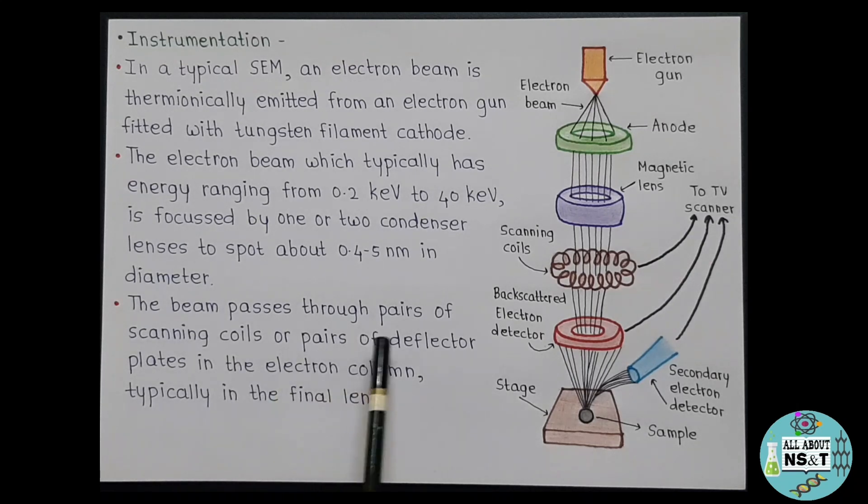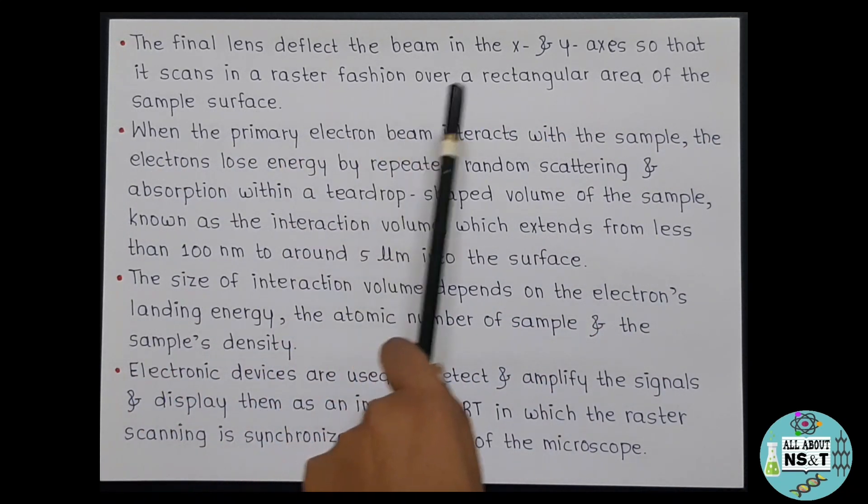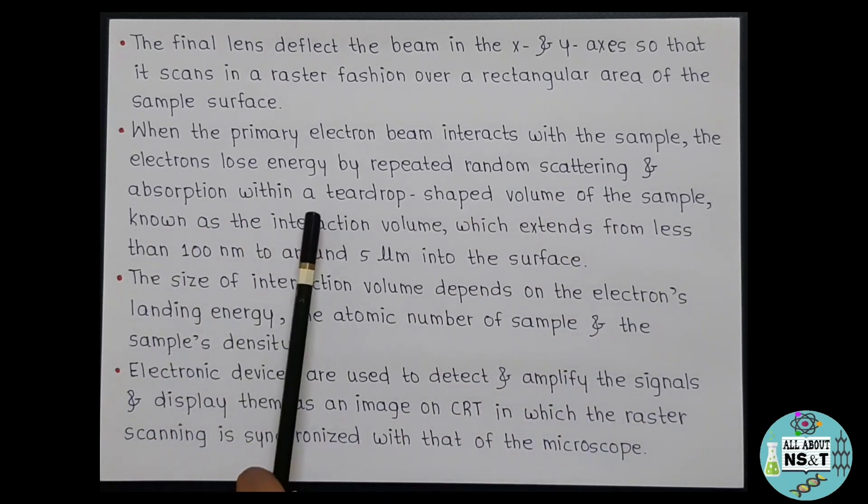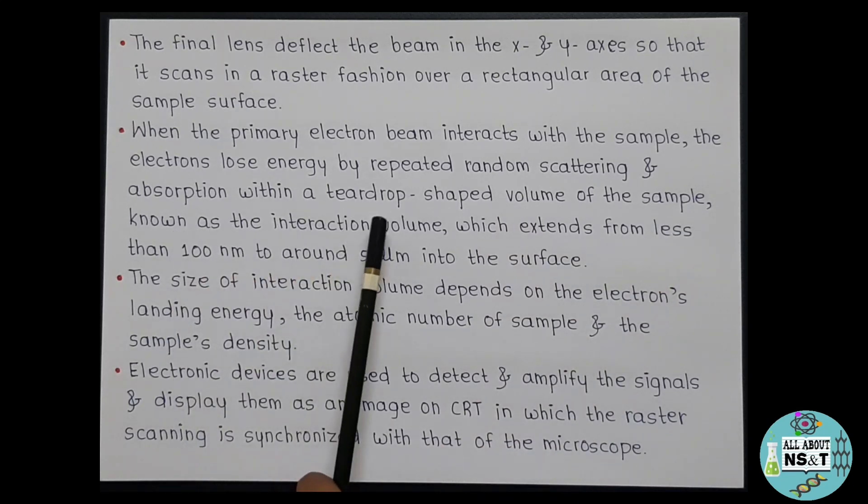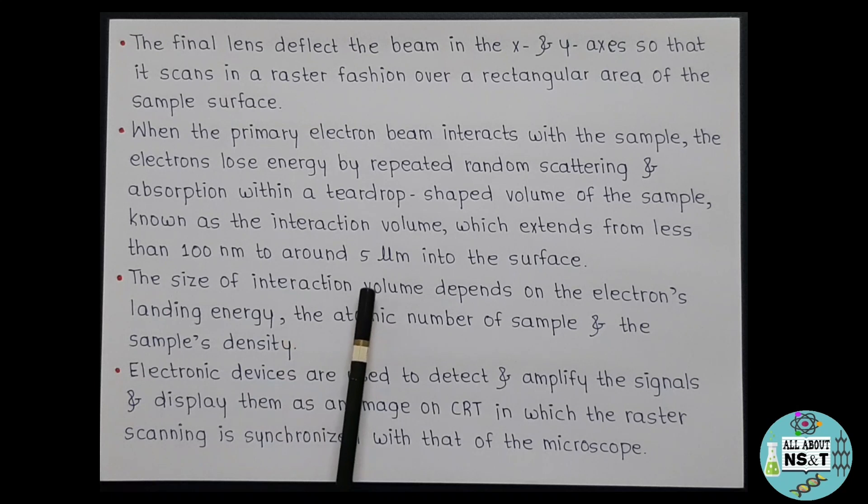Then the beam passes through pairs of scanning coils or pair of deflector plates in the electron column, typically in the final lens. The final lens then deflects the beam in the x and y axis so that it scans in a raster fashion over a rectangular area of the sample surface. When the primary electron beam interacts with the sample, the electrons lose energy by repeated random scattering and absorption within a teardrop shaped volume of the sample known as the interaction volume, which extends from less than 100 nanometers to around 5 micrometers into the surface. Here the size of interaction volume depends on the electron's landing energy, the atomic number of sample, and the sample's density. Various electronic devices are used to detect and amplify the signals and display them as an image on CRT, in which the raster scanning is synchronized with that of the microscope.